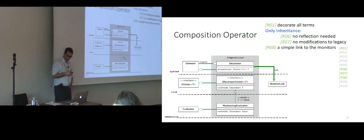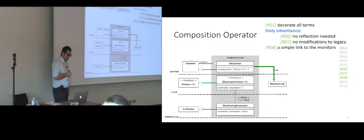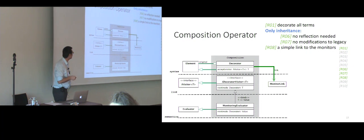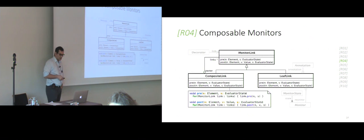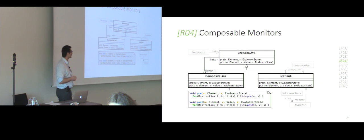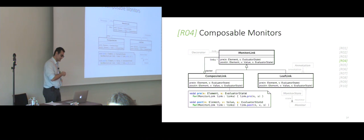We have a decorated visitor which inherits from the visitor interface of our language, and the monitoring evaluator which inherits from the initial evaluator. In terms of requirements: completeness is as much achieved as in Kisson's monitoring semantics. Through the use of inheritance we don't need reflection, so we argue it's more portable. We don't impose modification to legacy code, and the connection to the tools is realized through a link to the implementation of the syntax and semantics of the specific tool.